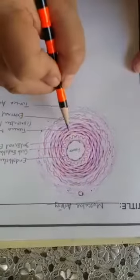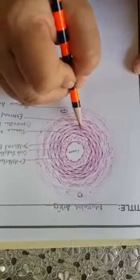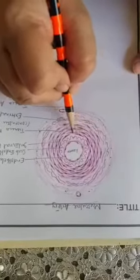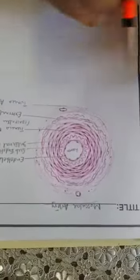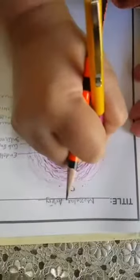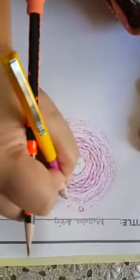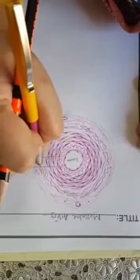Again I repeat, do not leave spaces between smooth muscles and internal elastic lamina, also in between the subsequent layers of smooth muscles. They should not have too much space. You will draw three to four layers of external elastic lamina.